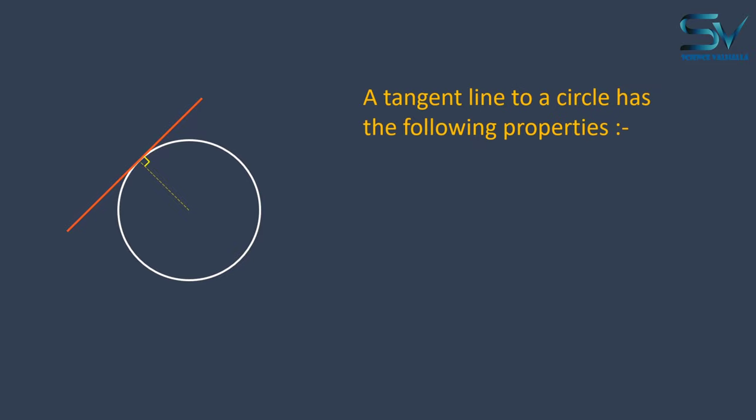We begin by drawing a circle. And here we have drawn a line which is the tangent to the circle. Let us now use this diagram to determine the properties of this tangent line.